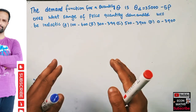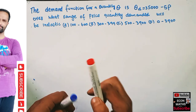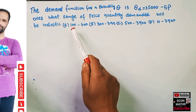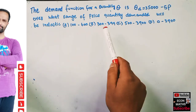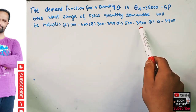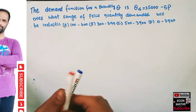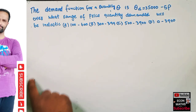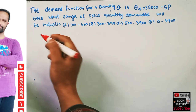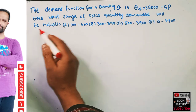We have to find out the price range in which our quantity demanded will be inelastic. The options are: from 100 to 600, 300 to 399, 500 to 3900, or from 0 to 3900. We have to find out the correct option here.